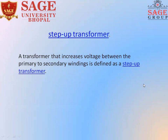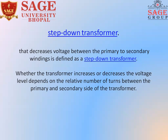Firstly we discuss the step up transformer. A step up transformer is a transformer that increases voltage between the primary to secondary windings. And if you talk about the step down transformer, that decreases voltage between the primary to secondary windings, is known as a step down transformer.